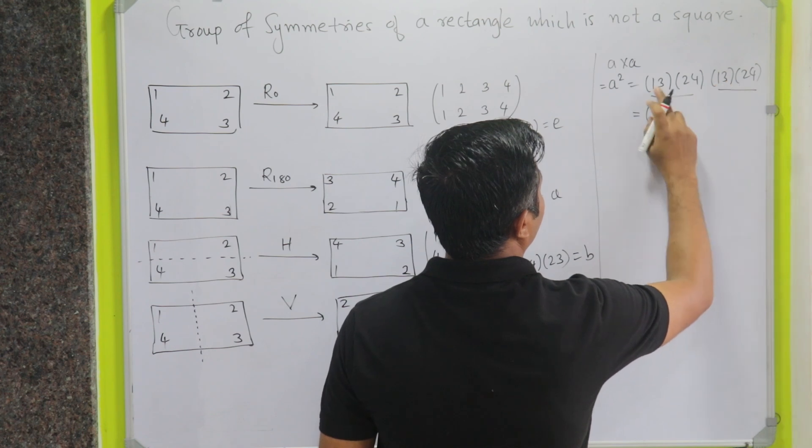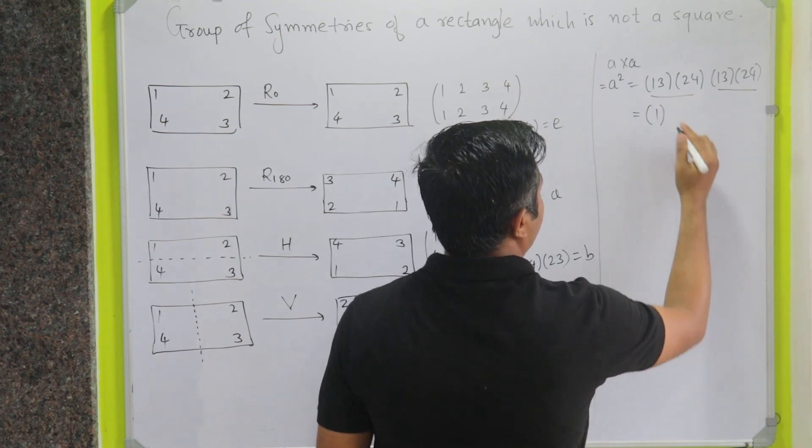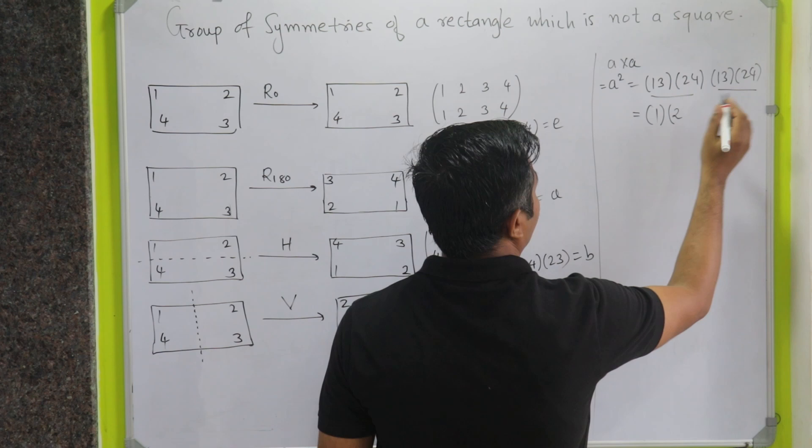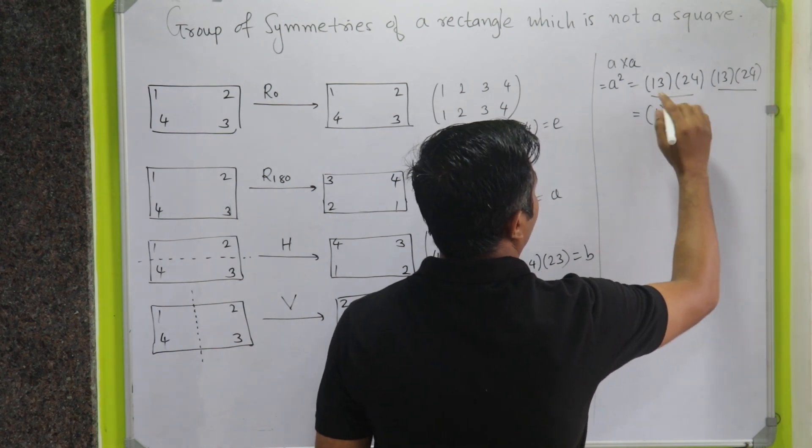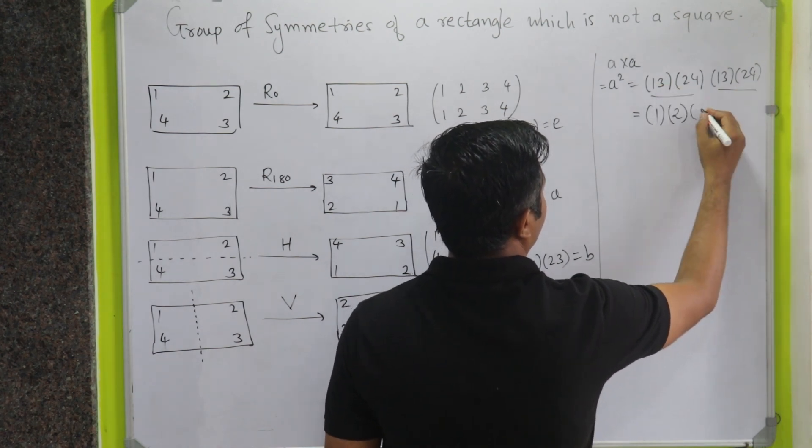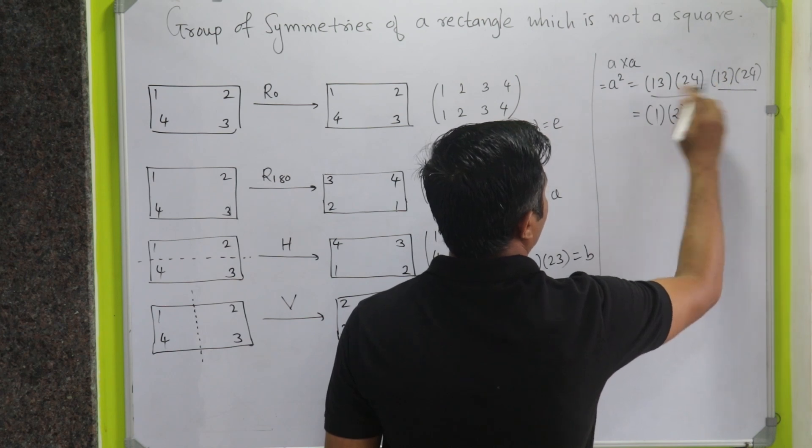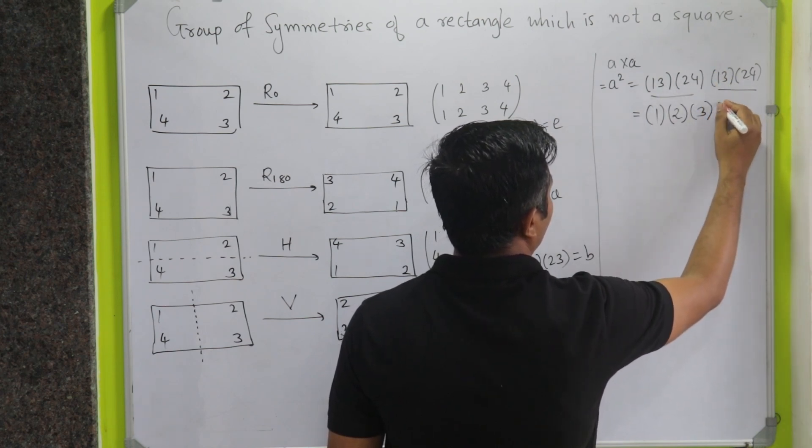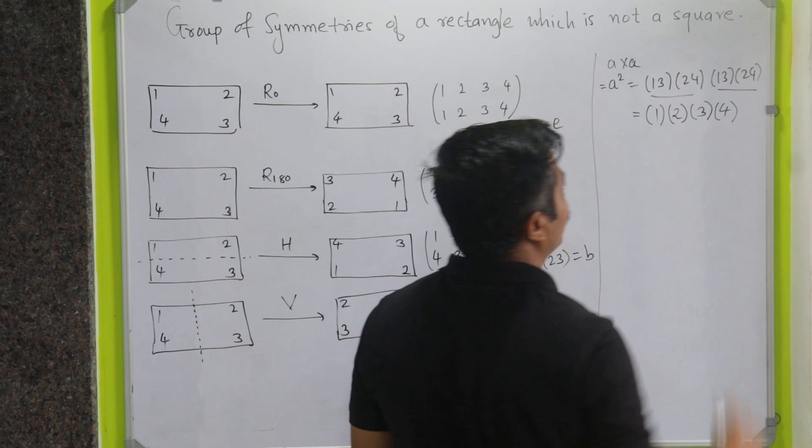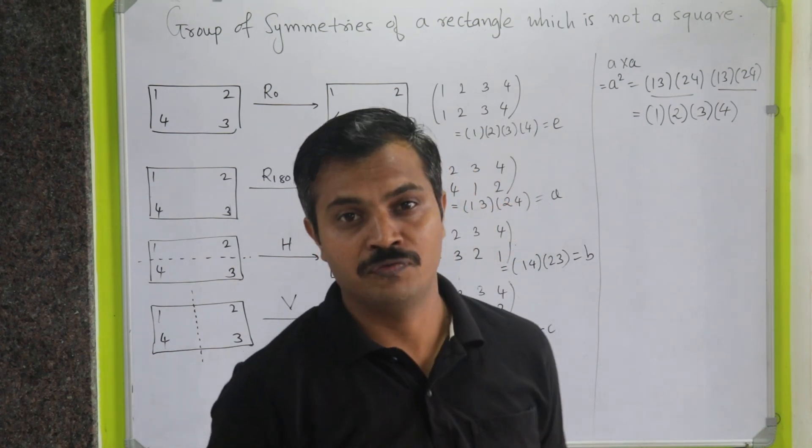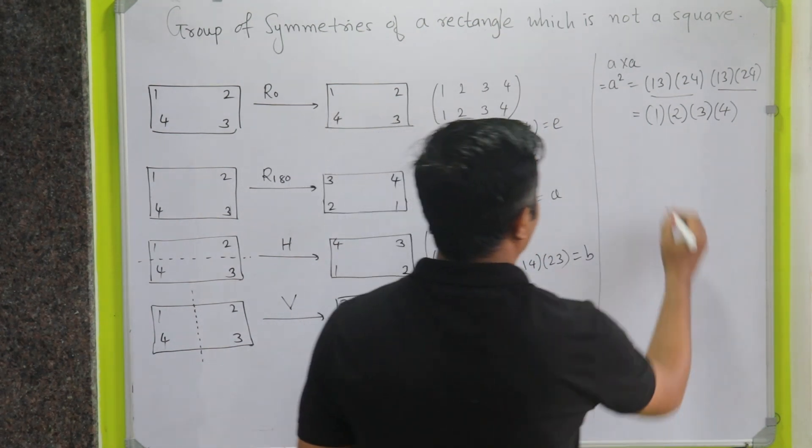We start with 1, 1 maps to 3, 3 maps to 1, so 1 is mapping to 1. Starting from 2, 2 maps to 4, 4 maps to 2, so 2 is mapping to 2. Starting from 3, 3 maps to 1, 1 maps to 3, so 3 is mapping to 3. Similarly, we can check 4 is mapping to 4. So this is actually nothing but E.